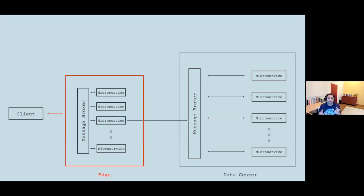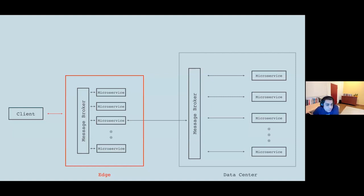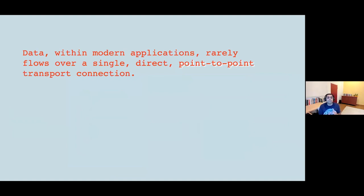Taking this further, as we move towards more edge computation — in connected car scenarios, connected factories, or smart buildings — you may have edge computation available. There may be a mini version of your data center architecture running at the edge, with lots of microservices available right there, and data only selectively sent back to your data center or cloud. My point is that most modern applications rarely have a simple point-to-point transport connection as the data flow — it's often many connections, many protocols, and often asynchronous.